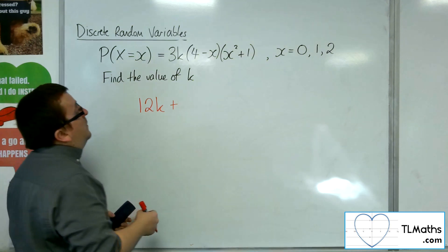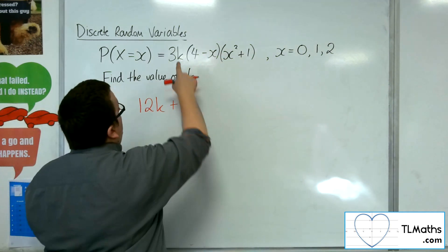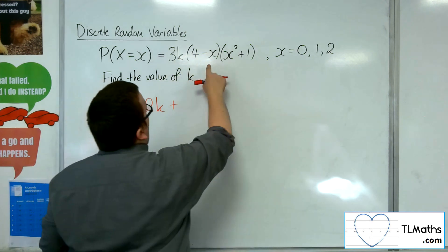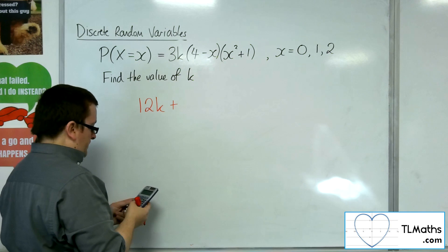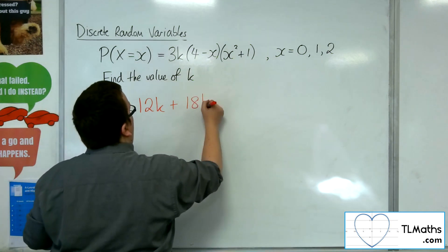Next up, I'm going to substitute in 1. So I will get 3k times (4 take away 1), so times 3, times by (1 plus 1), so 1 squared plus 1, so times by 2. And so I get 18, so it'll be 18k.